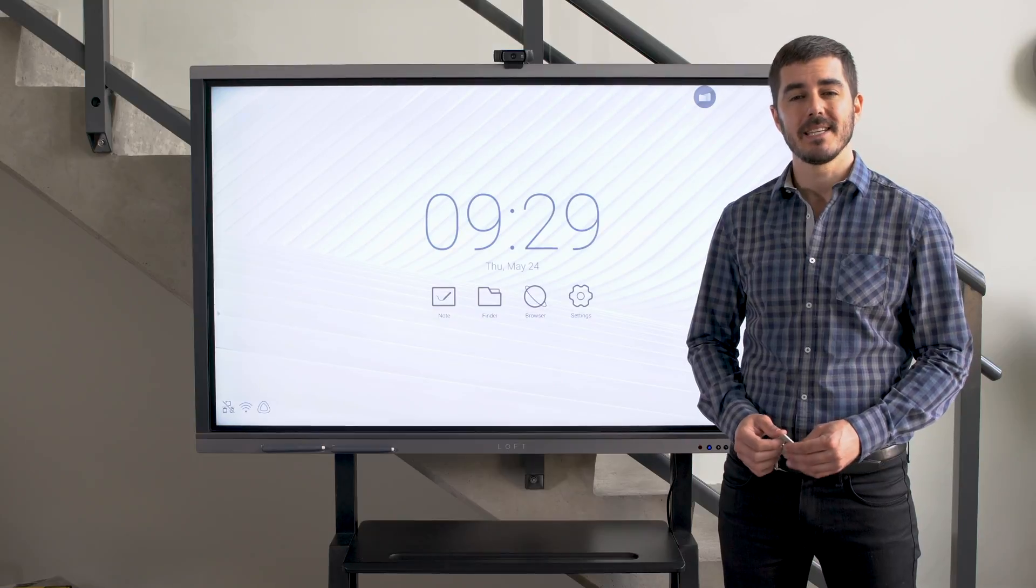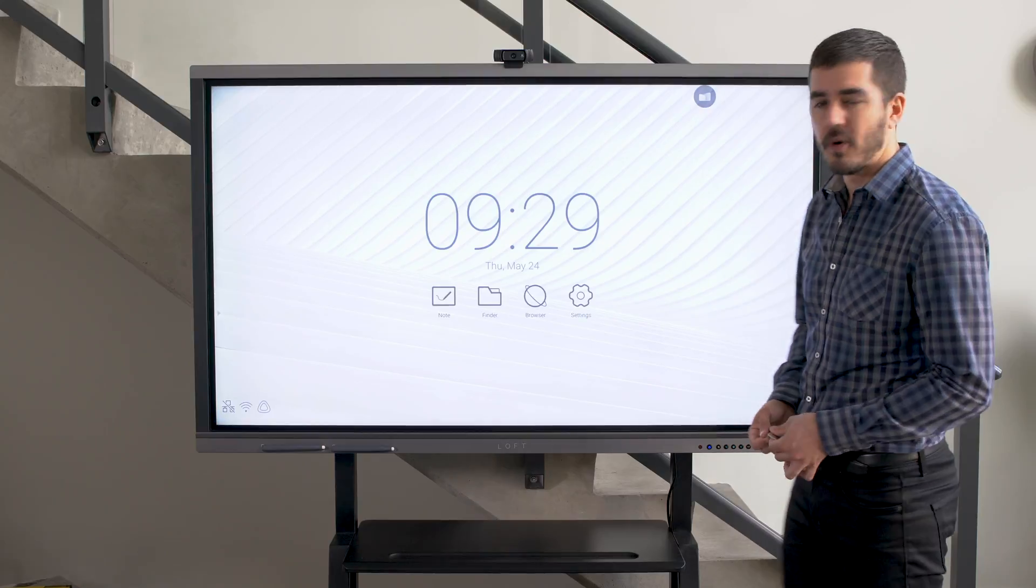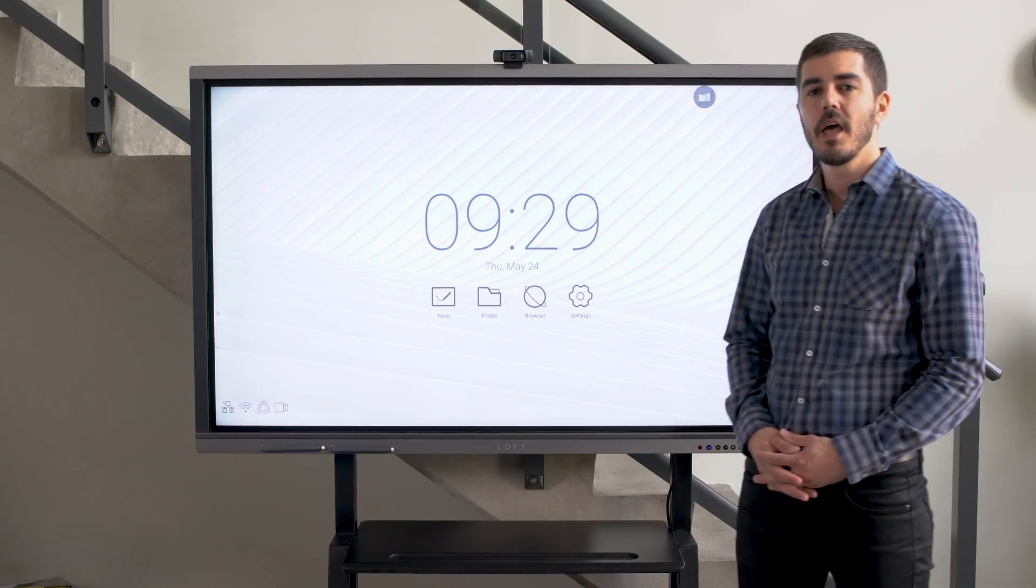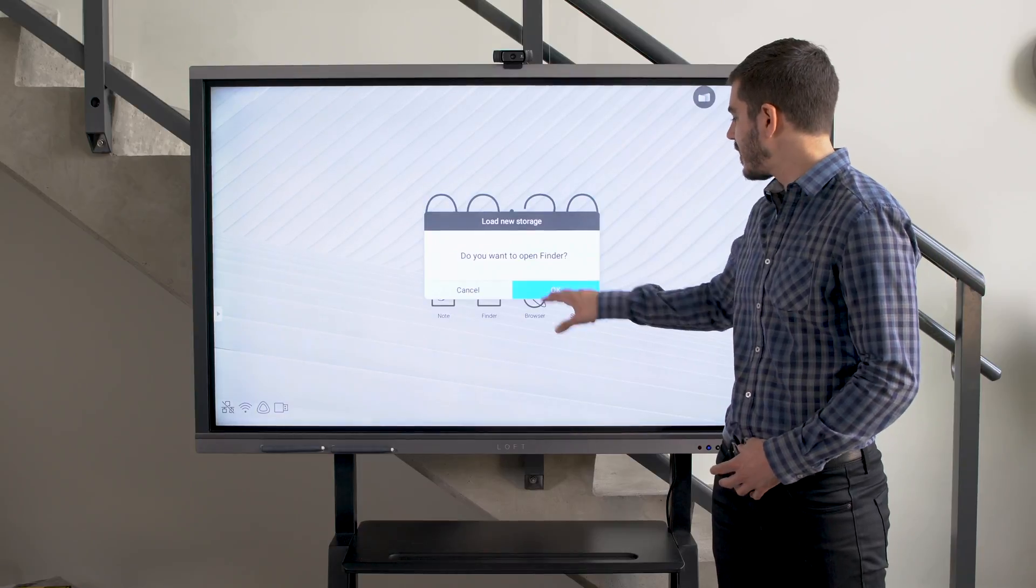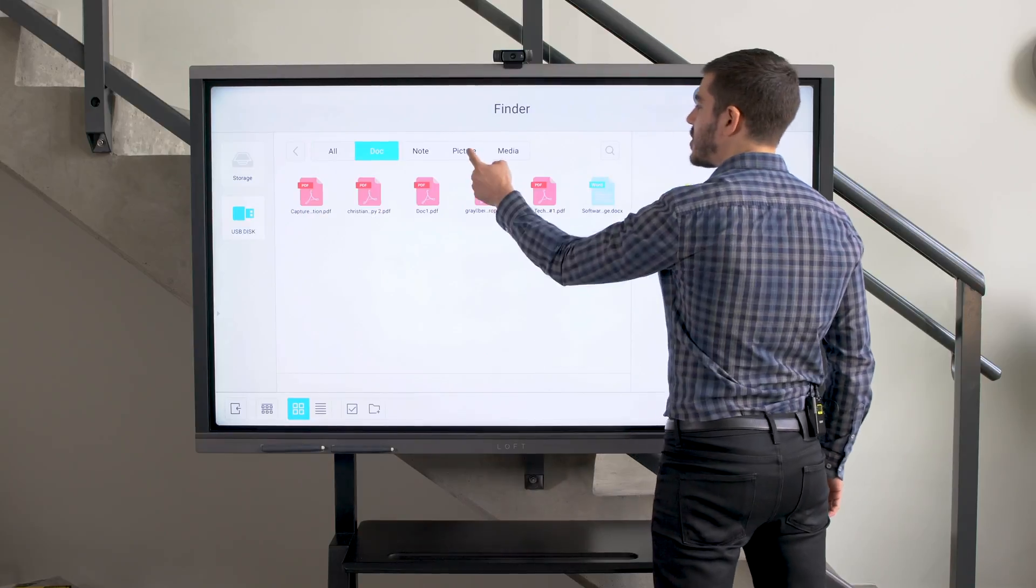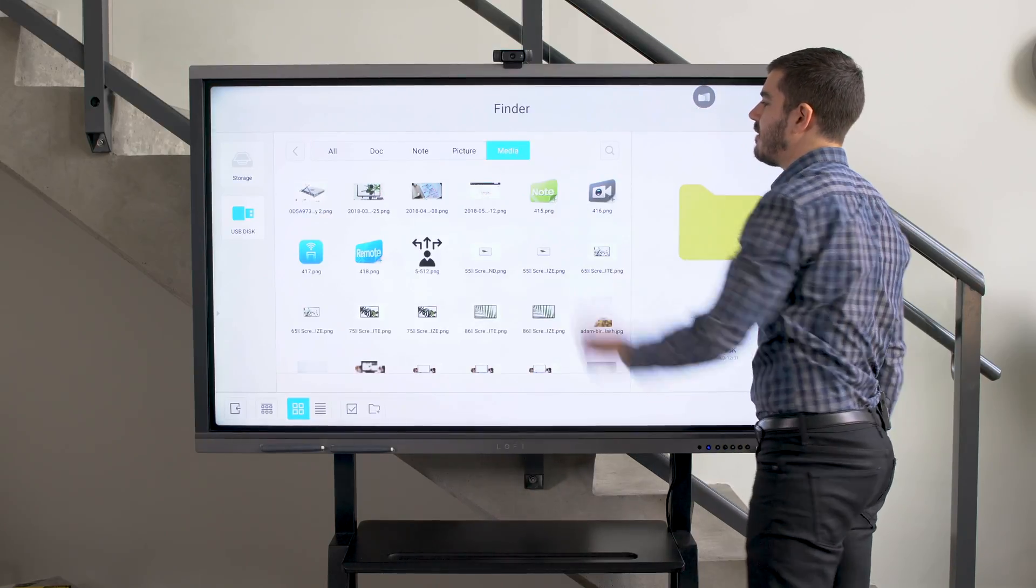If you'd like to access extra materials, it's easy. Just use one of the USB ports to view files or upload documents. Then when prompted, open the finder and start accessing your files. You can view documents, pictures, or even 4K video.